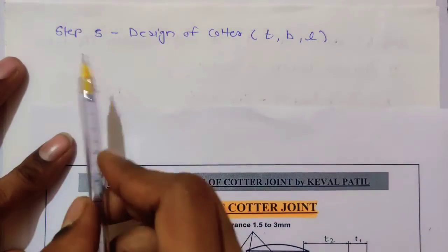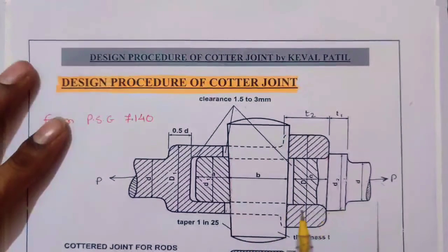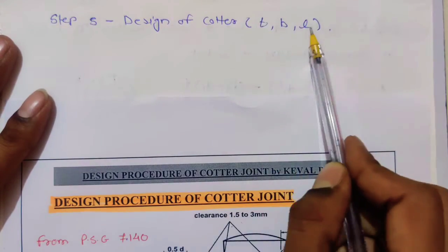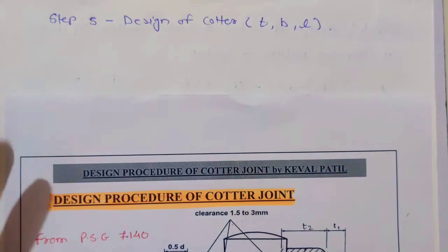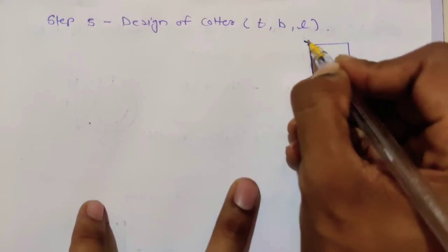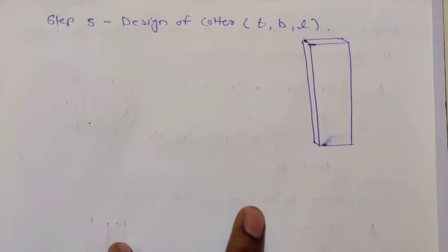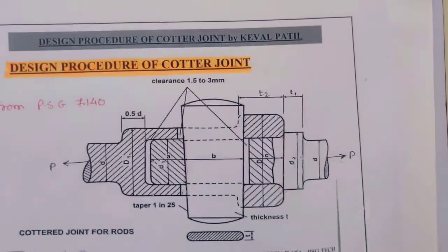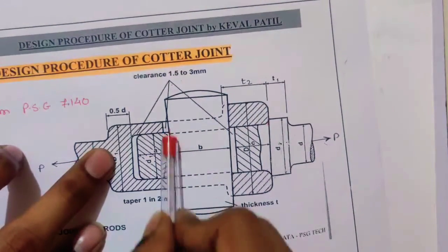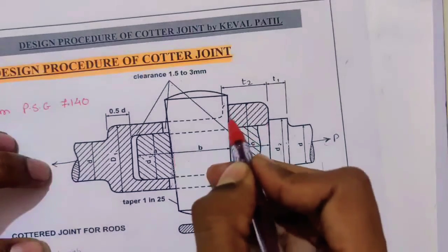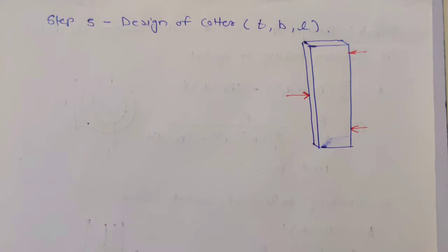Now the remaining part is the cotter. Step 5 is design of cotter. For the cotter we have three dimensions: width B, thickness T, and length L. T we already know — it is 0.3D. So we have to find B and L. This is the cotter; from one side we are pulling it using the spigot, and from the other side using the socket. The socket is touching here and here, applying force over here, so we have two forces.